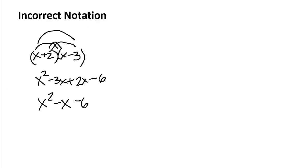Let's consider incorrect notation. Here a student is attempting to multiply two binomials, and they've got a lot of rainbows above. That is not correct notation. It might help you to think, but don't put that in your finished product, and there are no equal signs.